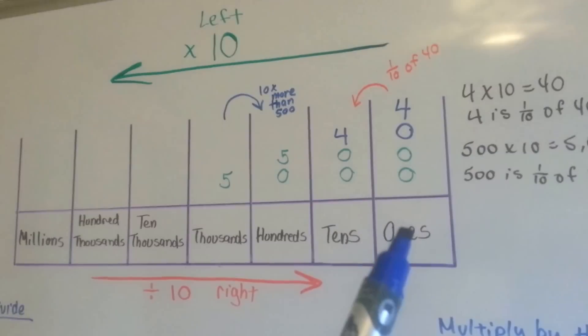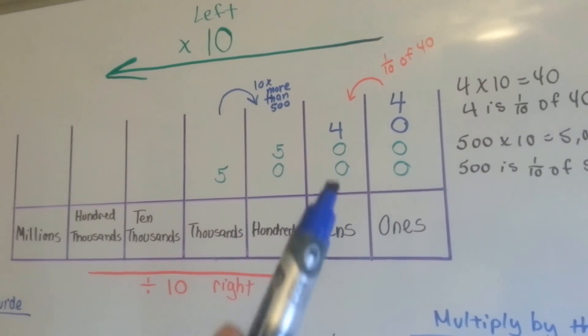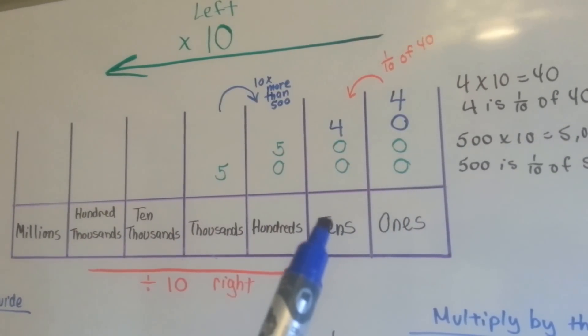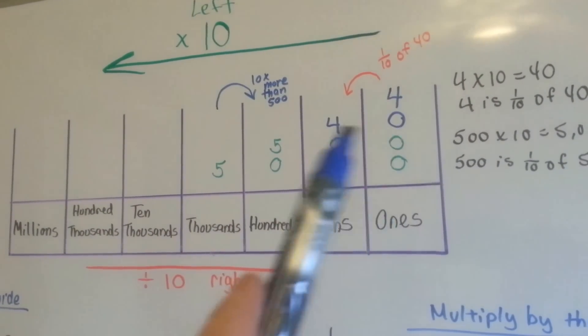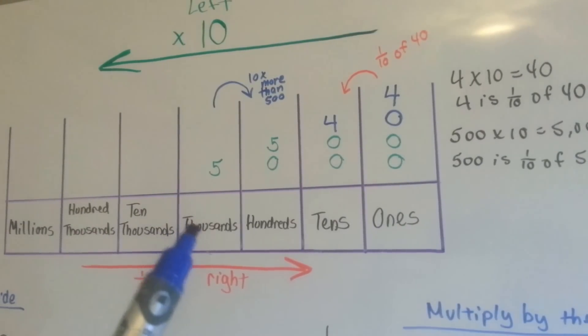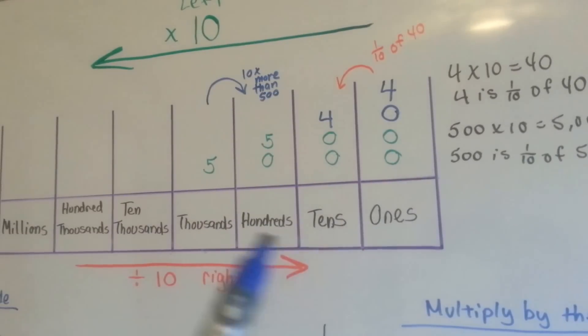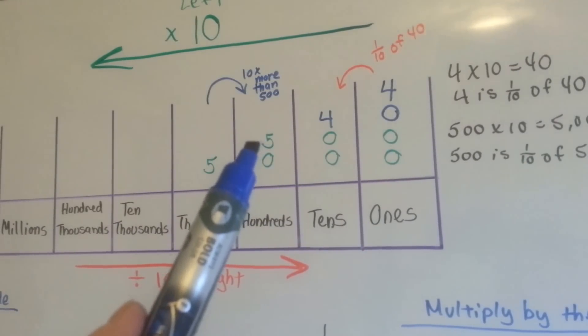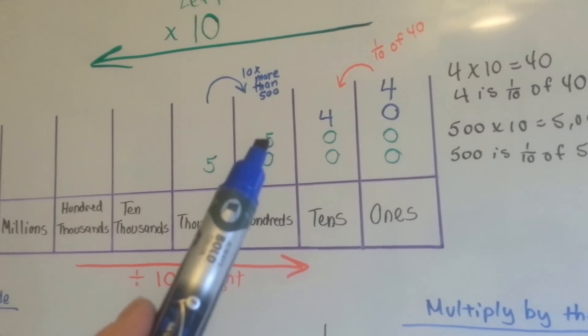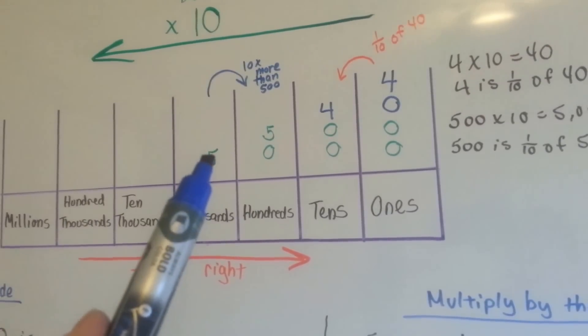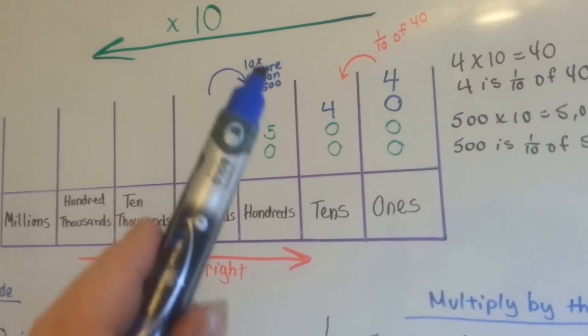If we have 4 in the ones place and we multiply it by 10, it gives us 40. See? We multiplied by 10 to get the 40. If we have a number here and we want to go back, we're dividing to go back smaller. If you have 500 and you multiplied it by 10 and got 5,000, you could divide it by 10 and get back to the 500.